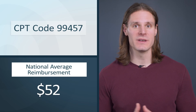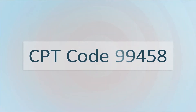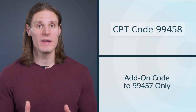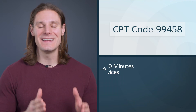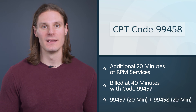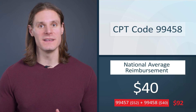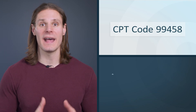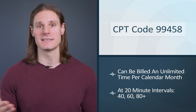99457's national average reimbursement is about $52 per month. There is also an add-on code to 99457 known as 99458. This can only be billed concurrently with 99457 and accounts for each additional 20 minutes over the initial 20 minutes. This code pays about $40 over the initial $52 and can be billed as many times as you'd like per month — so think 40, 60, 80-plus minutes.